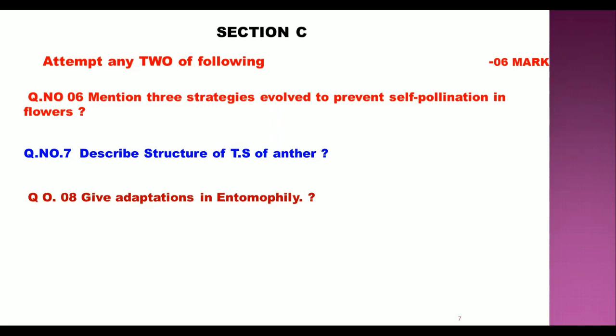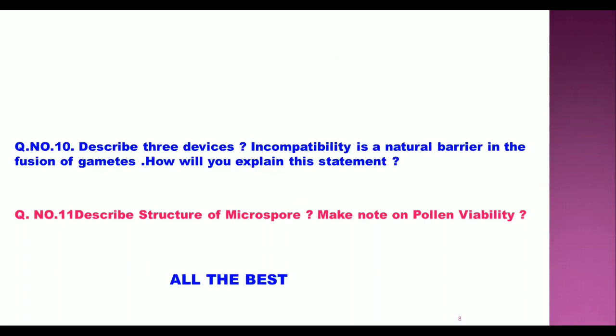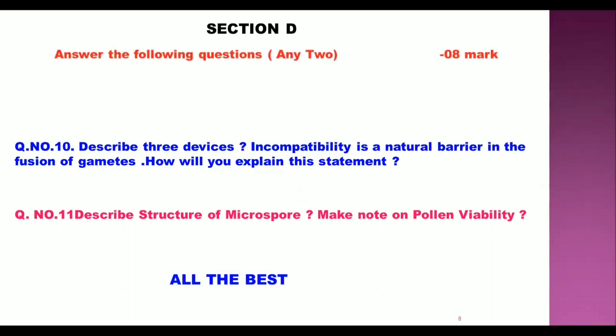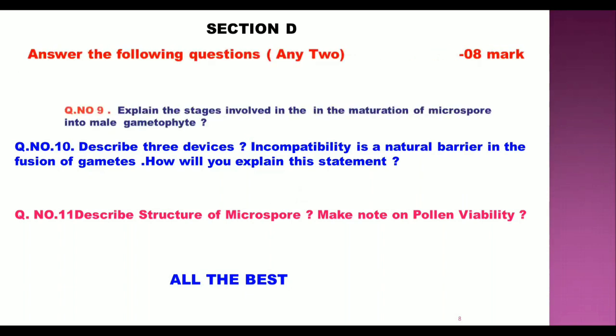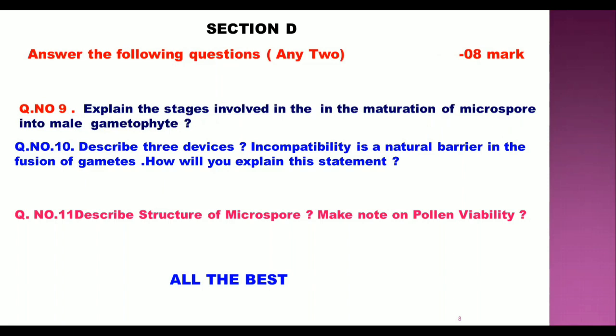Describe the adaptations in entomophily type of pollination from the anther. Section D: Explain the stages involved in the maturation of microspore into the male gametophyte. Also explain the three outbreeding devices.